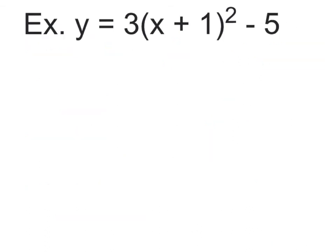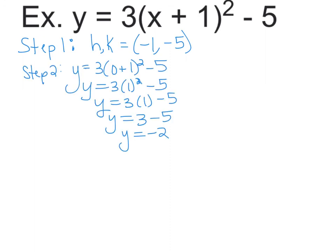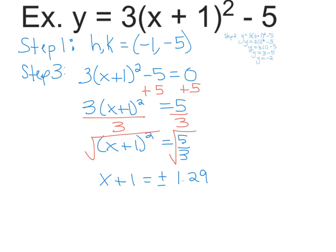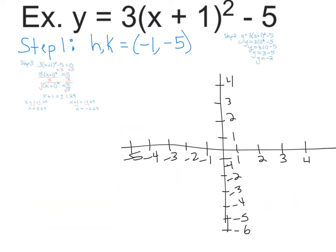Next equation: y equals 3 times (x plus 1) squared minus 5. Step 1: find the vertex — it's (negative 1, negative 5). Step 2: find the y-intercept by plugging in 0 for x — y equals negative 2. Step 3: find the x-intercepts. Plug in 0 for y, add 5 to both sides, divide by 3, take the square root of both sides, getting x plus 1 equals plus or minus 1.29. Solving gives x equals 0.29 and x equals negative 2.29. Plot the vertex, y-intercept, and x-intercepts, then sketch the parabola.